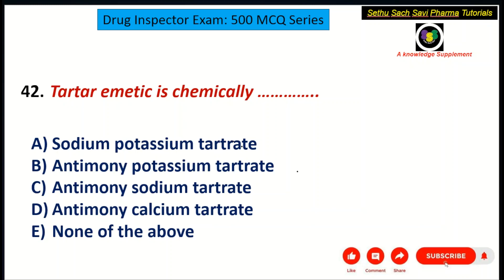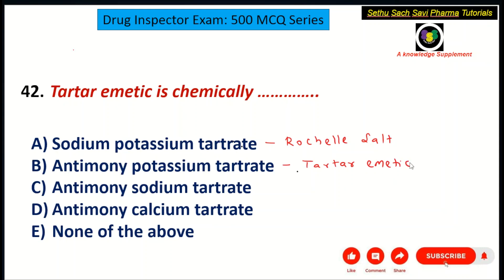Let's move on to the second question of the day. Tartar emetic is chemically: A. Sodium potassium tartrate, B. Antimony potassium tartrate, C. Antimony sodium tartrate, D. Antimony calcium tartrate. Sodium potassium tartrate is called Rochelle salt, whereas antimony potassium tartrate is the chemical name of tartar emetic. So the correct answer is B. Antimony potassium tartrate.